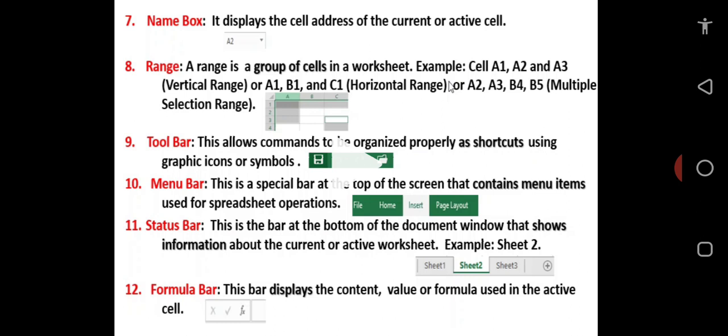Number 11, the status bar. This is the bar at the bottom of the document window that shows information about the current or active worksheet. The screen clip shows that sheet 2 enabled is the current or active sheet. Anytime any of the sheets is enabled, at that point that sheet is the only sheet you can work on, referred to as the current or the active sheet.